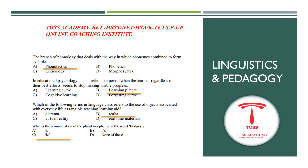In educational psychology, the blank refers to a period when the learner, regardless of their best effort, seems to stop making visible progress. This relates to the concept that in a learner's life there are ups and downs. When a learner reaches a particular point, there is a saturation level where no visible progress seems to happen. This is what we call the learning plateau.